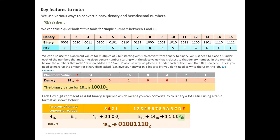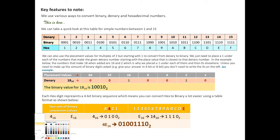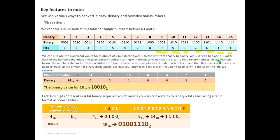Key features to note: denary numbers go from one to fifteen; binary numbers in four bits go from 0001 to 1111; their hexadecimal representatives start at one up to F. After nine, we no longer write numbers — we write letters starting from A. So A is 10 or 1010, B is 11 or 1011, and so forth up to F which is 1111. These letters represent hexadecimal values, and you can use this table to convert numbers.